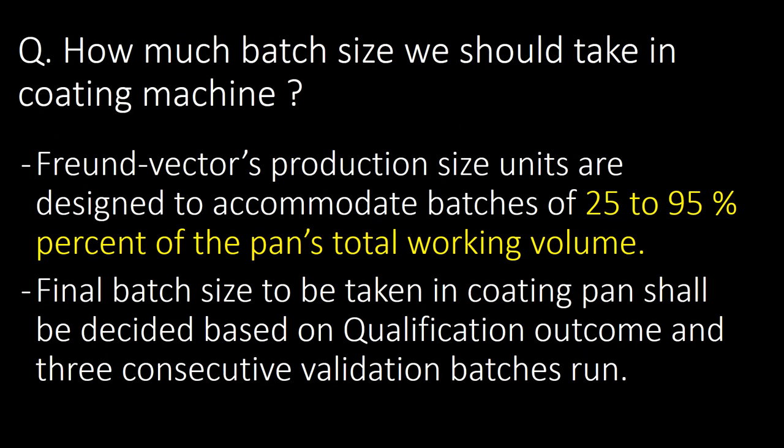How much batch size should we take in the coating machine? Production-size units are designed to accommodate batches of 25 to 95 percent of the pan's total working volume. The final batch size to be taken in the coating pan shall be decided based on the qualification outcome and three consecutive validation batch runs.